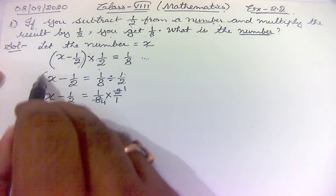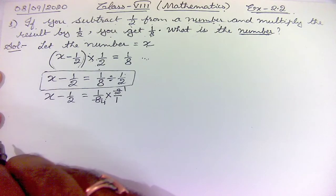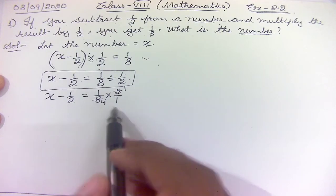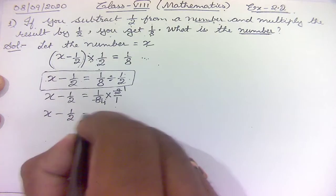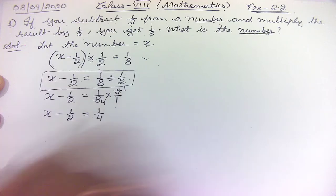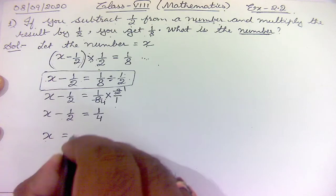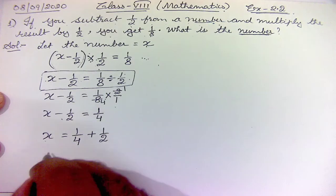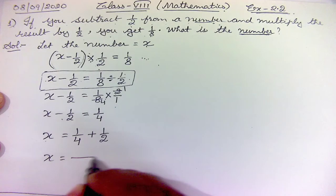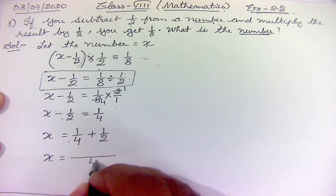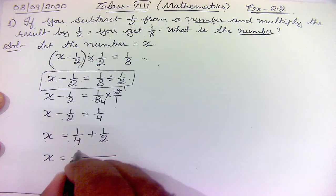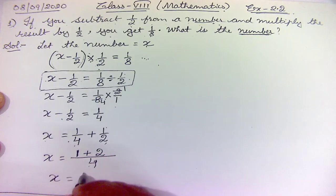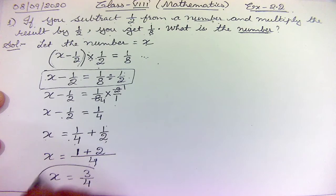You can skip the intermediate step and directly write x − 1/2 = 1/8 × 2 = 1/4. Now moving minus 1/2 to the other side, it becomes plus 1/2, so x = 1/4 + 1/2. Taking LCM of 4 and 2, which is 4: we get (1 + 2)/4 = 3/4. So x equals 3/4.